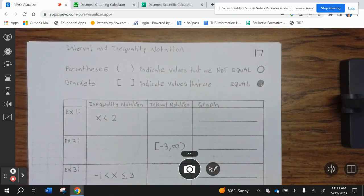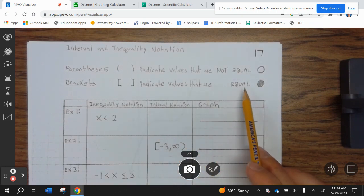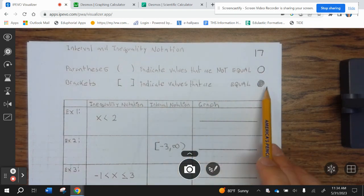Parentheses indicate values that are not equal. Brackets indicate values that are equal. Parentheses are an open circle. Brackets are a closed circle.